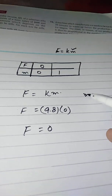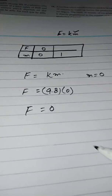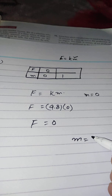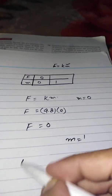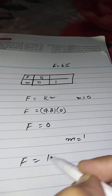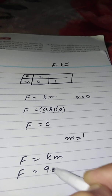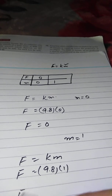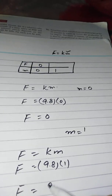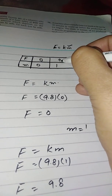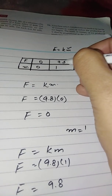Now put M equal to 1. So F equals KM: K is 9.8 and M is 1, so F equals 9.8. Write down the value of F as 9.8.